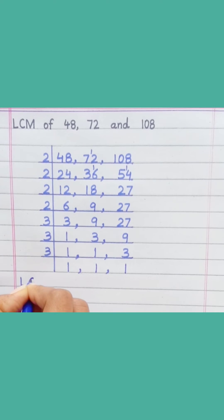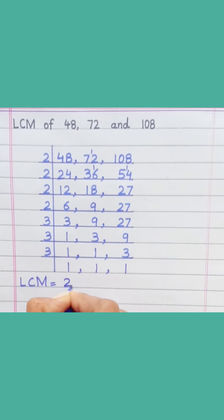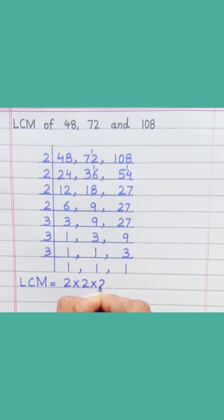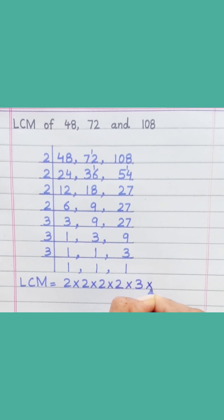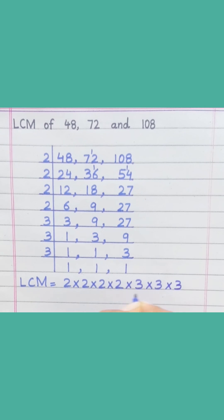LCM equals two multiply two, multiply two, multiply two, multiply three, multiply three, multiply three — four hundred and thirty-two.